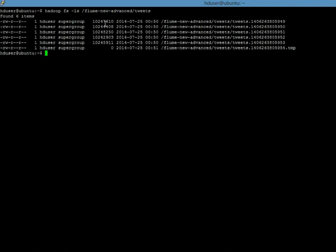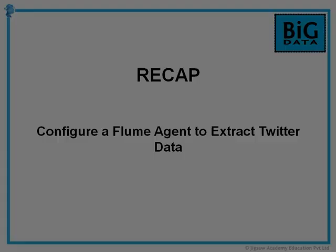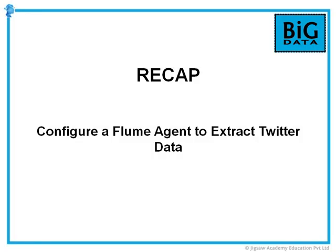The way you should write to HDFS is that the size of the file should at least be the default block size of your HDFS, which in most cases is 64 MB. Similarly, you can play around with the other properties to your advantage. So with that we come to the end of this video. We covered in detail how to configure a flume agent to extract tweets from Twitter. Thank you for watching.